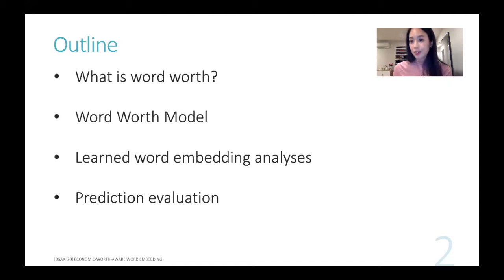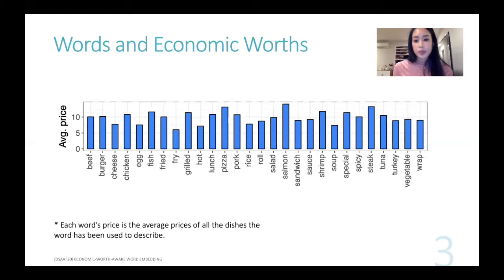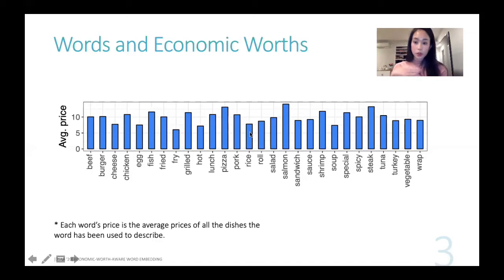When we look at it from the data perspective, we can actually see that. As you can see, the prices that each of these words associate with really vary from one to another. One example: whenever we look at egg or just rice, they tend to be on the lower price end. But when you look at salmon or steak, they're associated with higher prices, which is very natural.